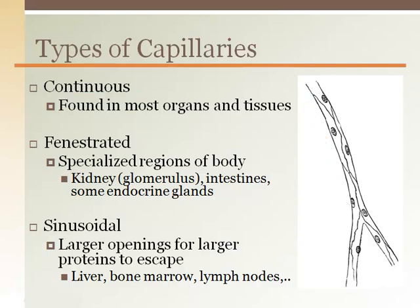Most capillaries are continuous. However, there are a few specialized regions that have fenestrated capillaries. Fenestrated capillaries allow a few small proteins to leave the blood and go into specialized tissue areas, such as the filtering region of the kidney — the glomerulus — areas of absorption in the intestines, and some endocrine glands. Sinusoidal capillaries have the largest gaps in them to allow large molecules to escape, and are found in the liver, bone marrow, and lymph nodes.